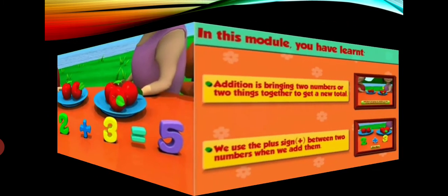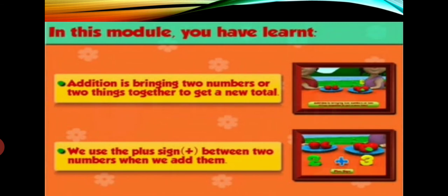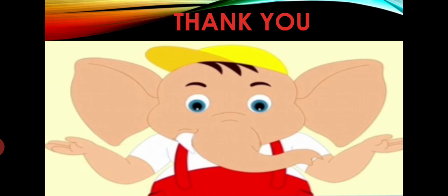In this module we have learned: addition is bringing two numbers or two things together to get a new total. Do things ko hum together unko plus karenge, then we will get a new total. And we use the plus sign between two numbers when we add them. Jab hum kisi do number ko add karenge, to we have to use a plus sign between them. Students, go through this module once more, learn it. We will meet in the next class. Till then, goodbye.